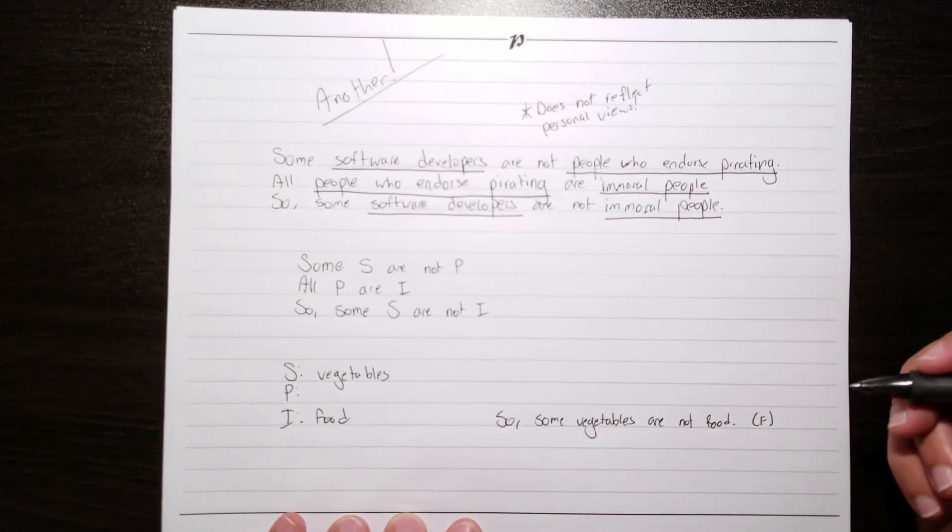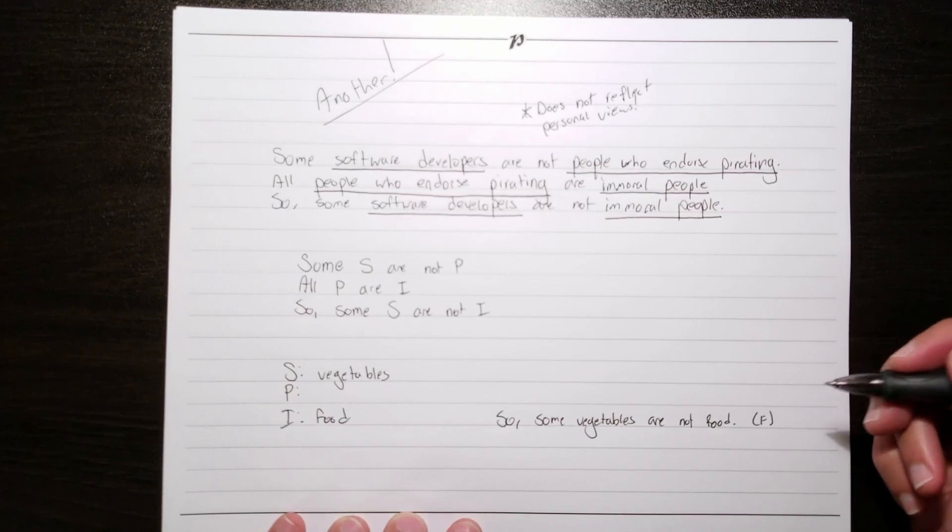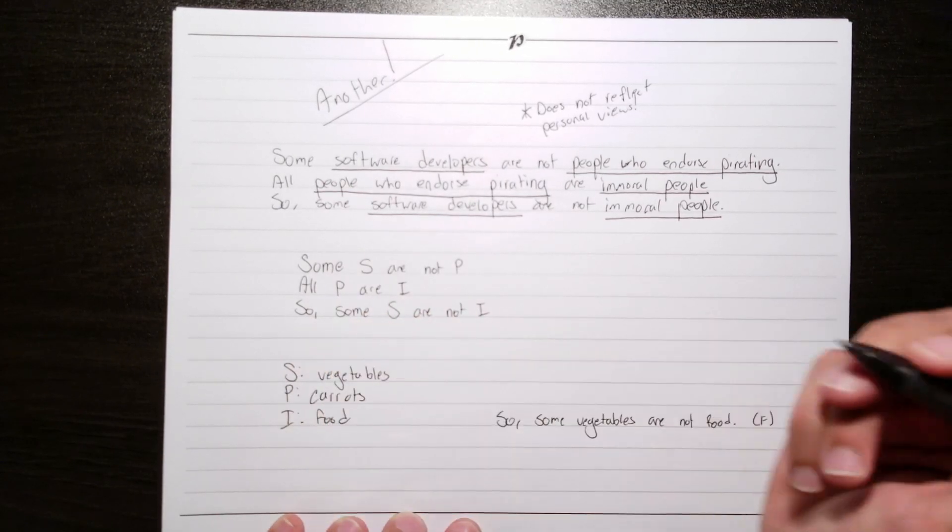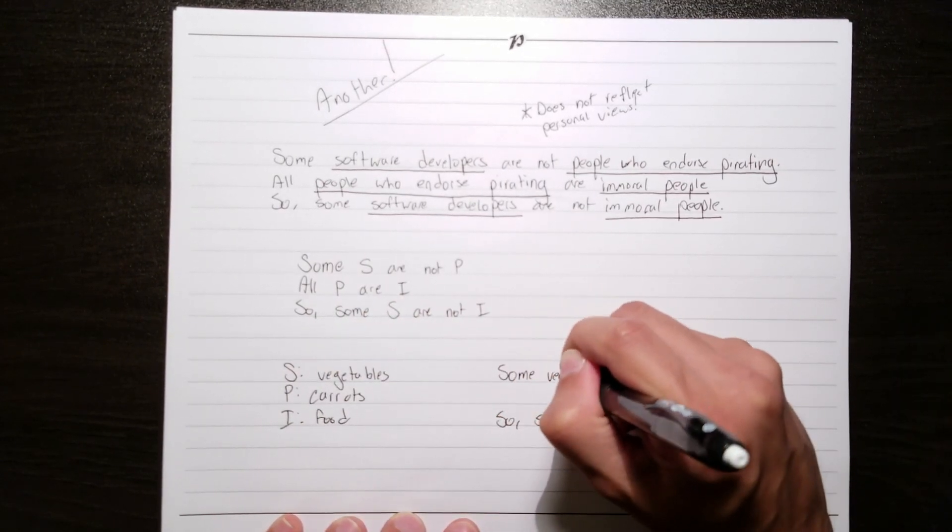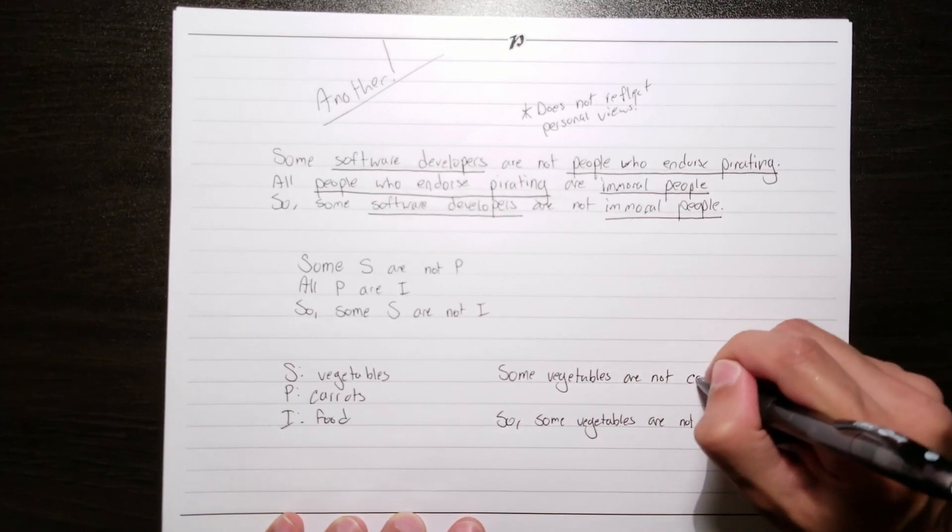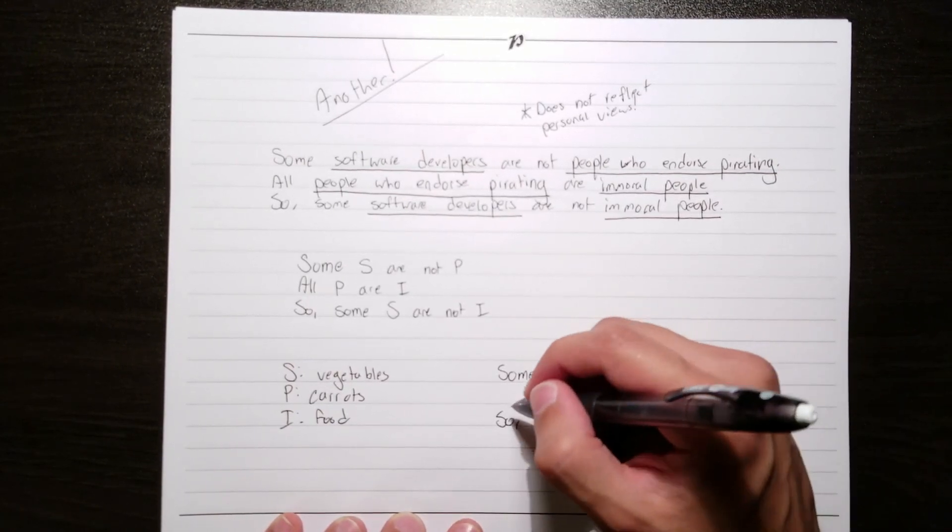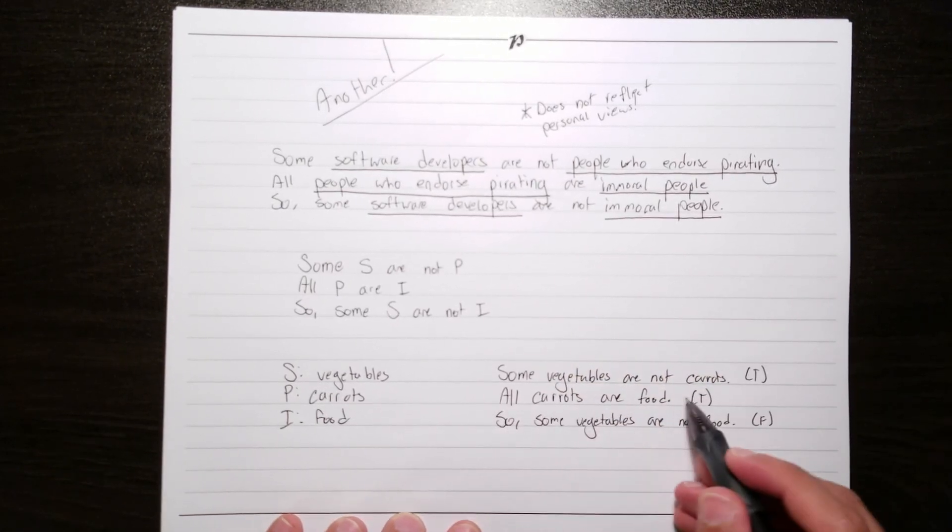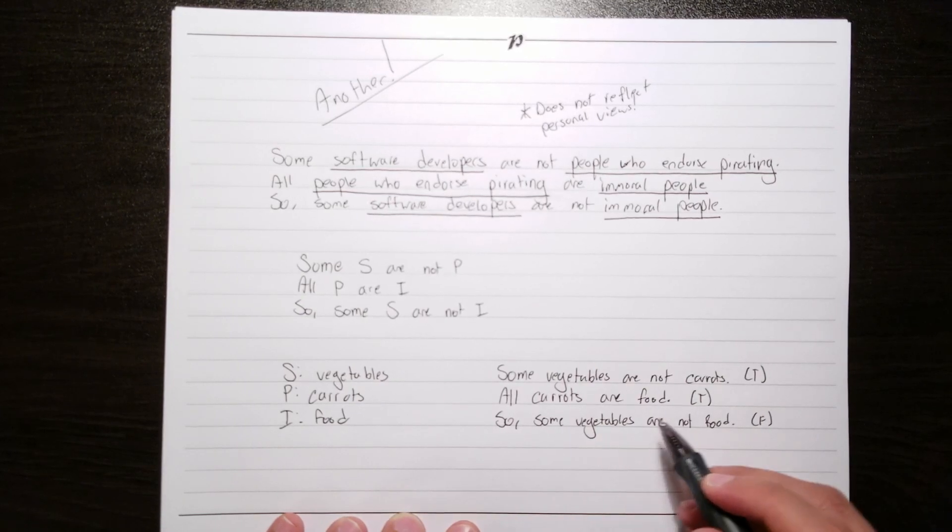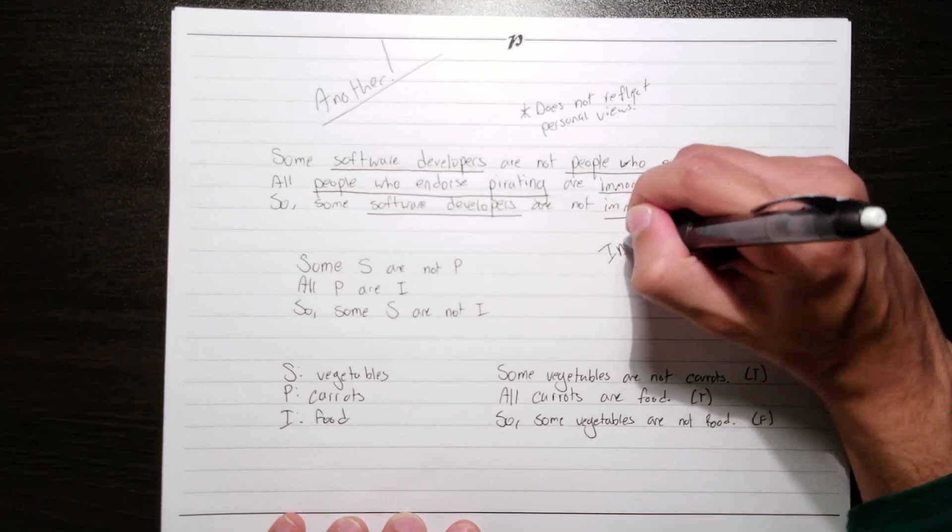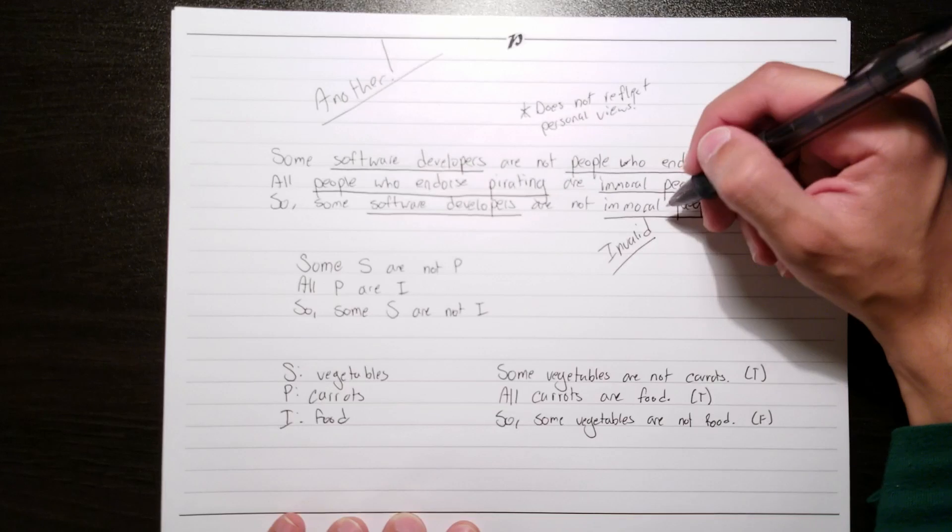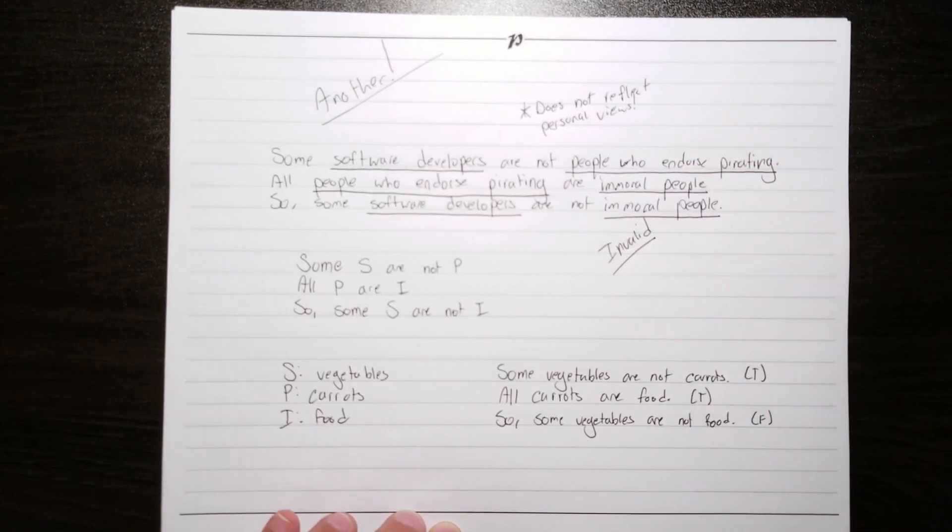And now let's go ahead and try to make our premises true. So let's see, we've got some vegetables are not p, so why don't we go ahead and make p carrots. And now we've got, some vegetables are not carrots. And this is true, plenty of vegetables are not carrots. And finally our second premise becomes, all carrots are food, which is clearly also true. And so our counterexample reads, some vegetables are not carrots, all carrots are food, so some vegetables are not food. This is clearly an invalid argument. And so we've proven that the argument that we're evaluating is invalid. That pretty much wraps up how to construct counterexamples.